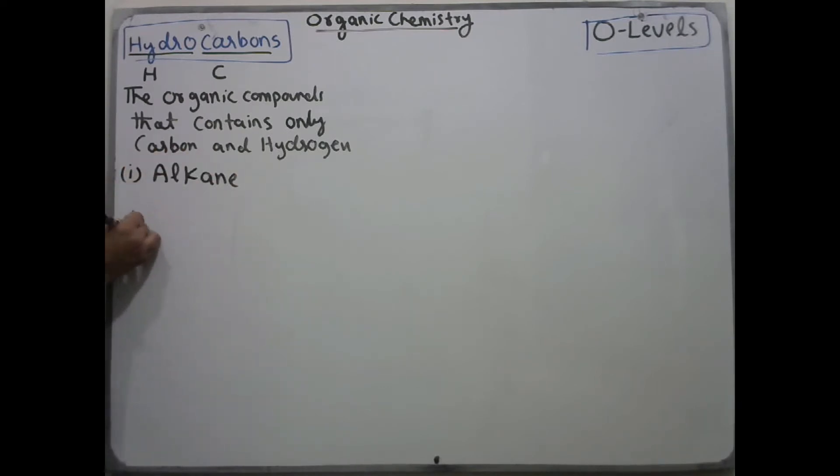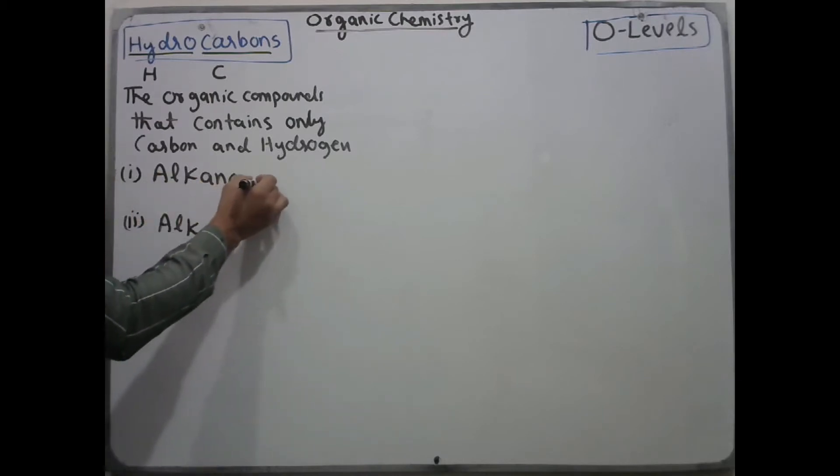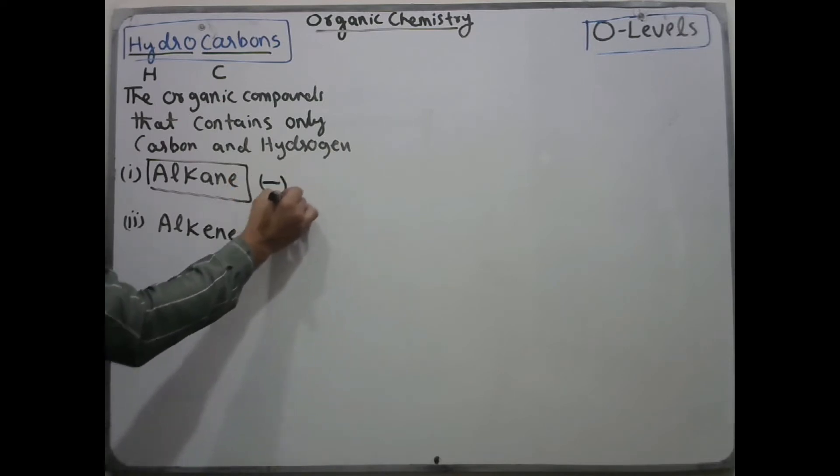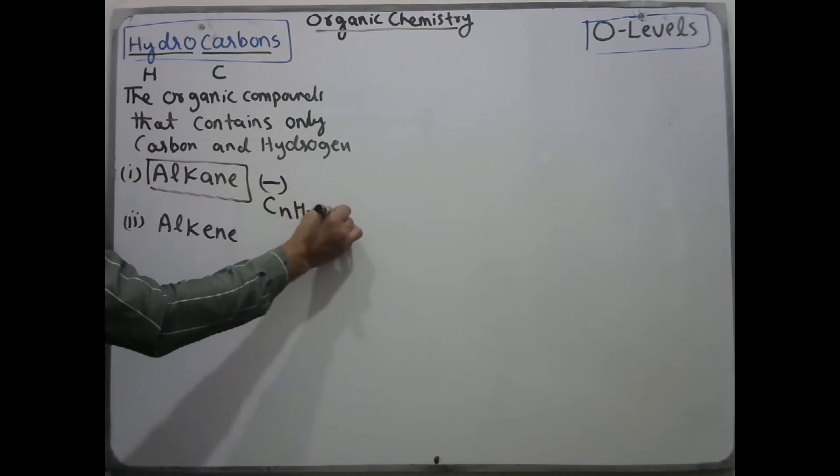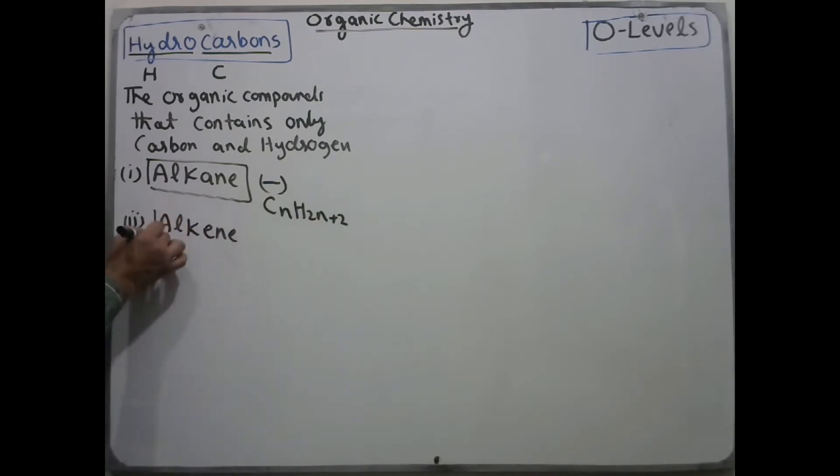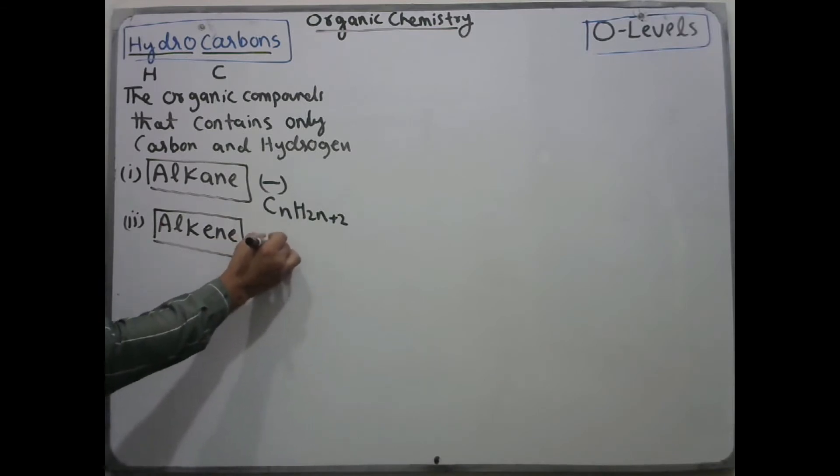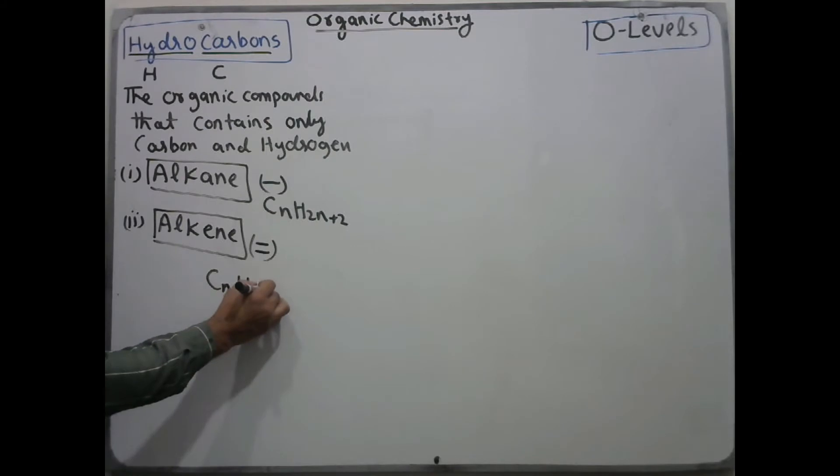There are two types: number one, alkanes, and number two, alkenes, that are included in our syllabus of O-levels chemistry. Alkanes have a single bond and the general formula is CnH2n+2. For alkenes there is a double bond and the general formula is CnH2n.